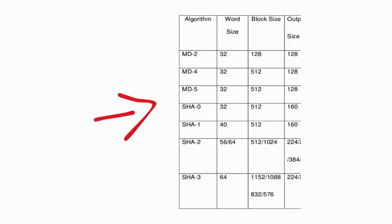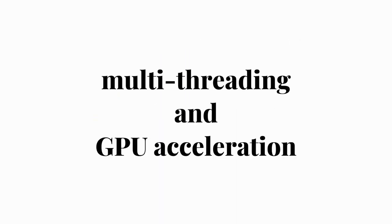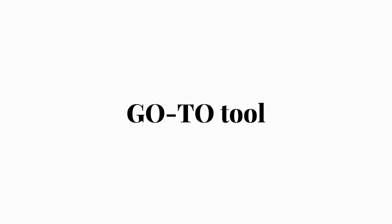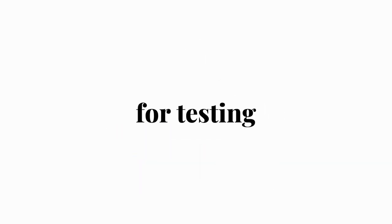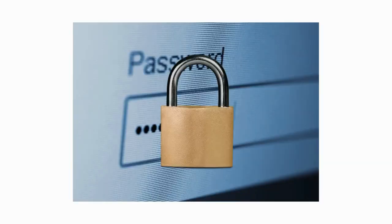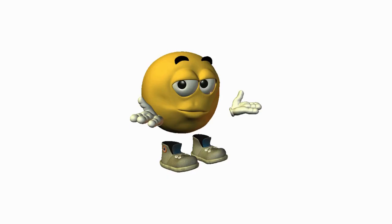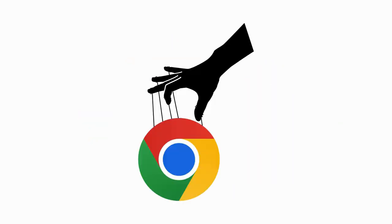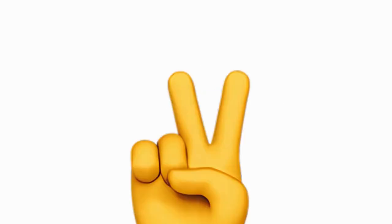Hashcat: a high-performance password cracking tool capable of recovering passwords from various hash algorithms. It supports multi-threading and GPU acceleration to speed up the cracking process, making it a go-to tool for testing password security. BeEF (Browser Exploitation Framework): a framework designed to exploit vulnerabilities in web browsers, allowing attackers to control a compromised browser and target users with further attacks. BeEF is used in both penetration testing and ethical hacking.